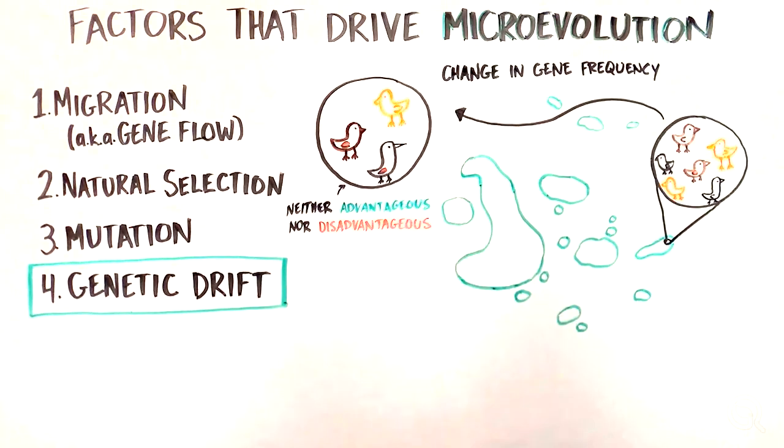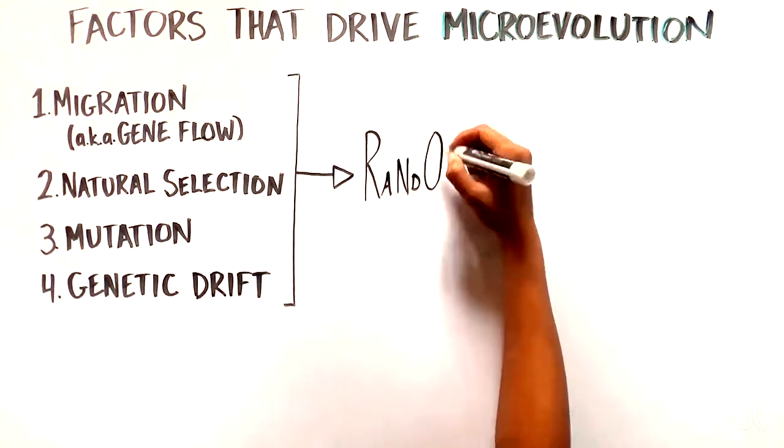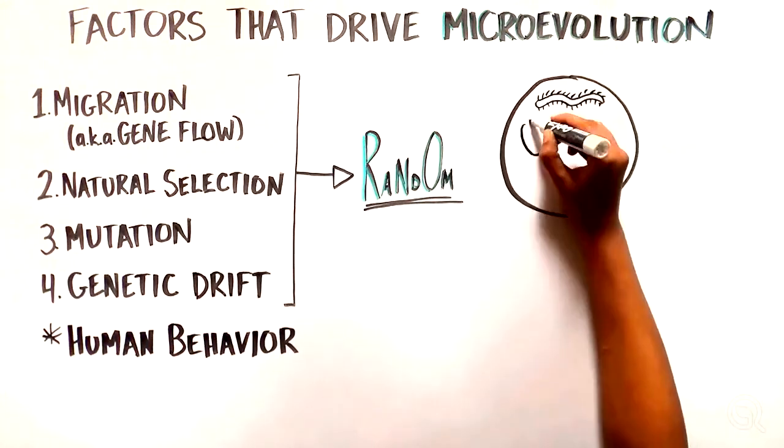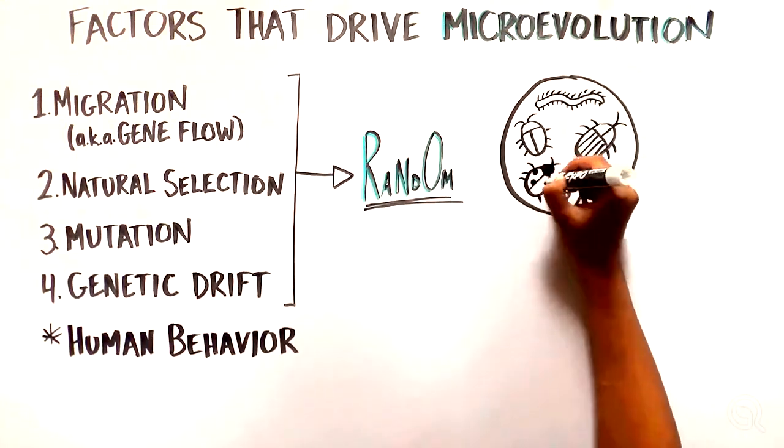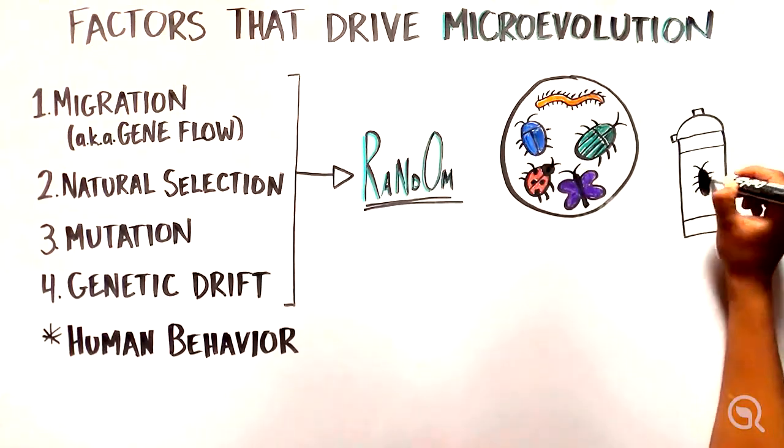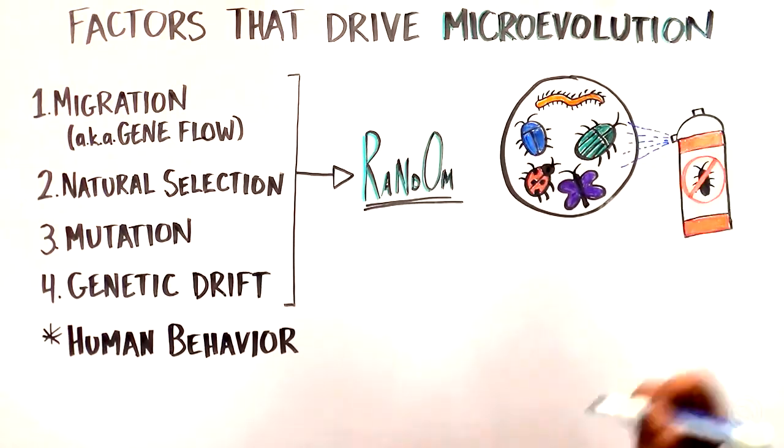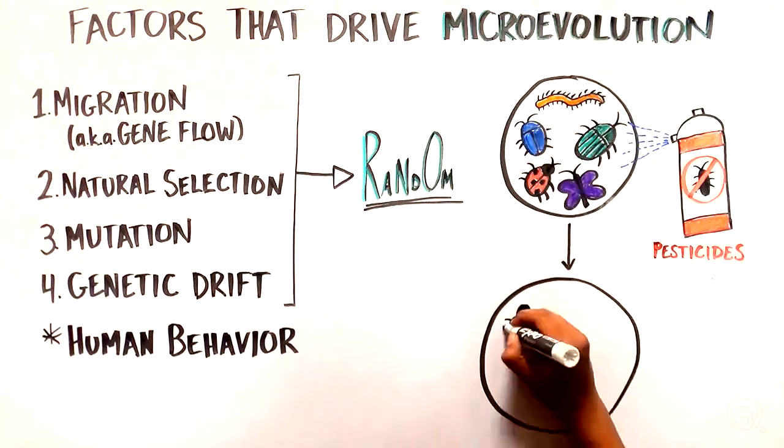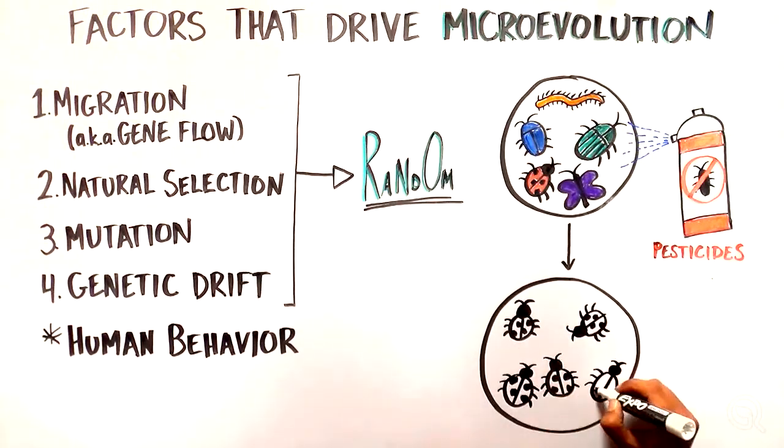While these examples we've talked about so far refer to random events driving evolution, there are examples of how human behavior can drive microevolution. For example, in response to pesticide use, some insects have developed resistance to those chemicals, allowing them to survive when exposed to those pesticides.